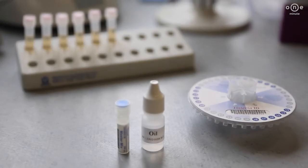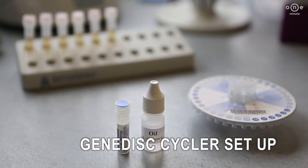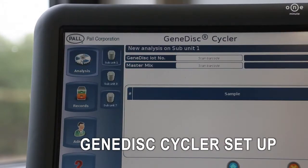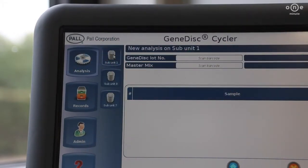It is very easy to run a real-time PCR on a GeneDisc Cycler. All you have to do is follow the instructions on the screen. Choose analysis on the cycler unit and then let the instrument guide you through the following steps.